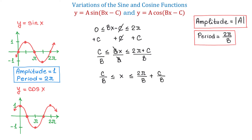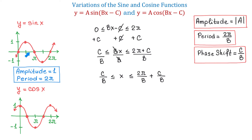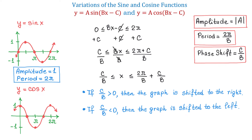So the phase shift equals c over b. To clarify: with the basic sine or cosine functions, the cycle starts at 0 and ends at 2 pi, and 2 pi also represents the period. But with these forms, the cycle starts at c over b, the period is 2 pi over b, and the cycle ends at 2 pi over b plus c over b. For the phase shift, there are two cases: if c over b is positive, then the graph is shifted to the right; but if c over b is negative, then the graph is shifted to the left.